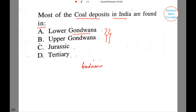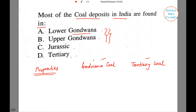Here I have Gondwana coal on one side and tertiary coal on the other, and we will distinguish between the two based on some properties. Though this is not strictly required, it is very important since both are in our options, so we should discuss their properties.